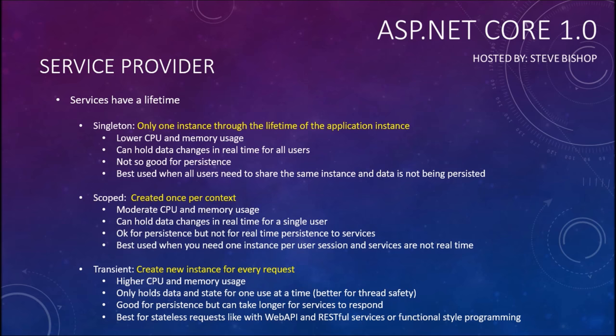Transient is best for stateless requests like Web API and RESTful services, or if you have a functional style of programming, because it's constantly checking for the latest information from those services before returning a result. A key component of functional style programming is that you should be newing up a new instance of an object every time — you should not be maintaining state within an object; you want to make changes and return a new instance. We're now going to hop into Visual Studio and focus on registering our services within the startup class of our ASP.NET Core application.